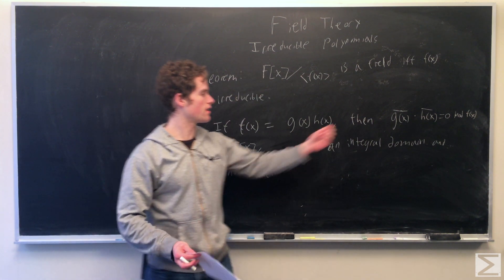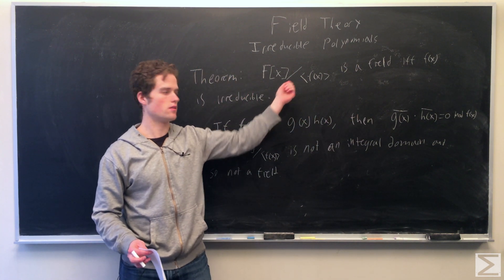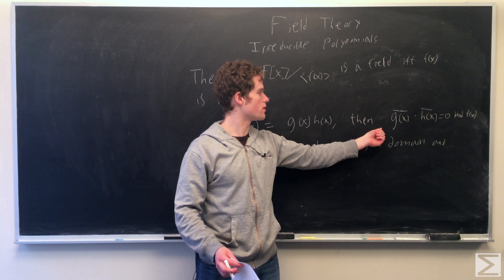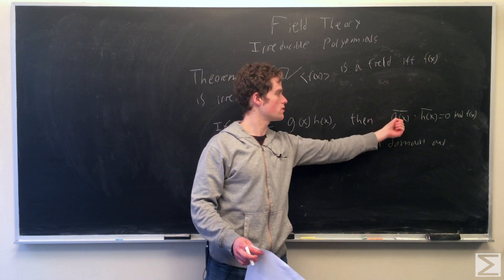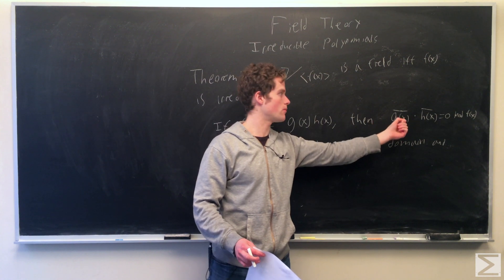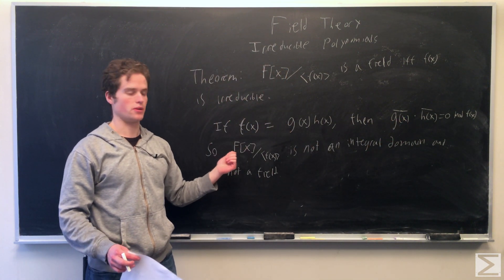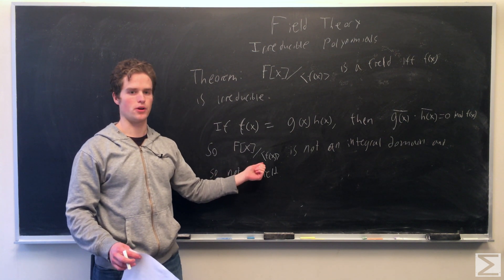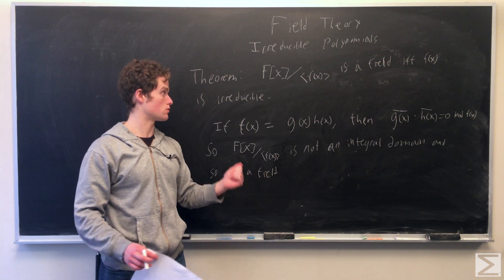Then looking at their equivalence classes in this ring modulo this ideal, then we have two non-zero elements which multiplied by zero mod f of x. So this implies that F of x modulo polynomial f of x is not an integral domain and thus not a field. So that's one direction.